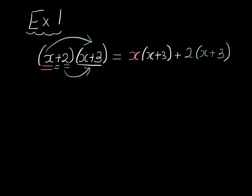Now we just expand the brackets. x multiplied by x we write as x squared, x multiplied by 3 we write as 3x, so let's add 3x. And in this bracket, 2 multiplied by x is 2x, so we add 2x. And 2 multiplied by 3 is 6, so we add 6.